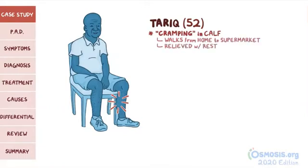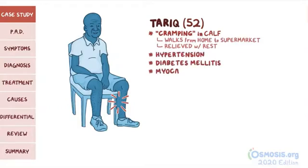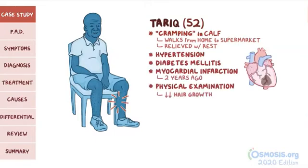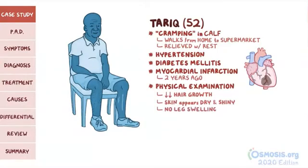Tariq also has a known history of hypertension, diabetes mellitus, and a myocardial infarction two years ago. On physical examination, there's a noticeable decrease in hair growth on the left side compared to the right and the skin appears dry and shiny. There is no leg swelling and there's no back pain.